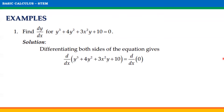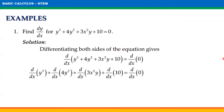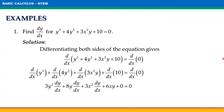Differentiating both sides of the equation gives us d/dx of y³ + 4y² + 3x²y + 10 equals d/dx of 0. To get the derivative of the left side and the right side, we will have d/dx of y³ plus d/dx of 4y² plus d/dx of 3x²y plus d/dx of 10 equals d/dx of 0. Getting the derivative of each term, we get 3y² dy/dx + 8y dy/dx + 3x² dy/dx + 6xy + 0 = 0.